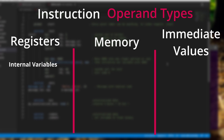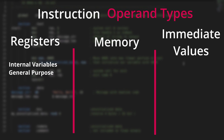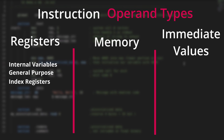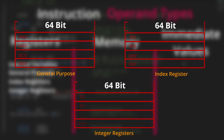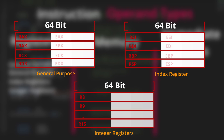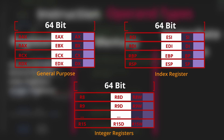There are several categories of registers. General purpose: RAX, RBX, RCX, and RDX. Index registers such as RSI and RDI, the base pointer, and the stack pointer. Finally there are the integer registers R8 through R15. These are 64-bit versions. Each of these 64-bit versions will have a 32-bit, 16-bit, and an 8-bit version.